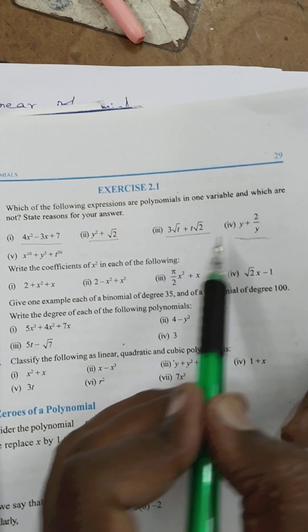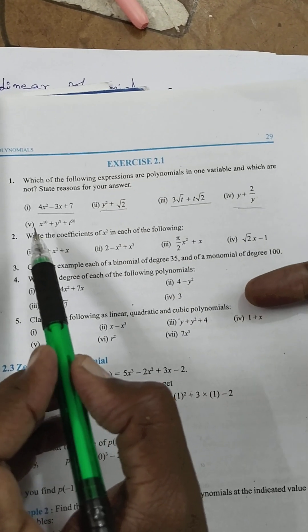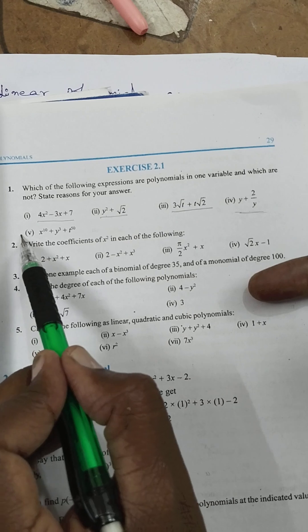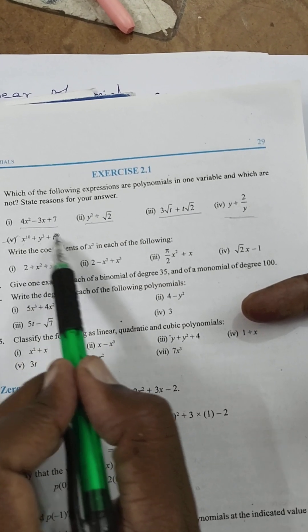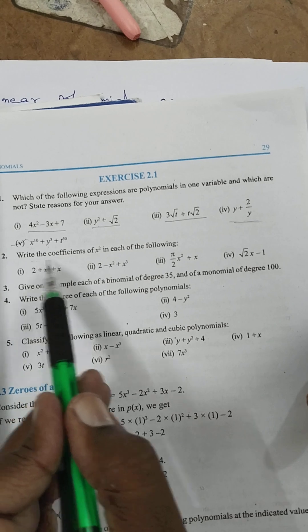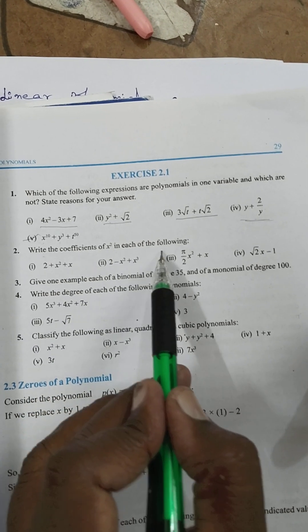Fractions are not a polynomial. This one is the polynomial. Not variable x, y, t and it is not a polynomial. Write the coefficient of x square in each of the following.